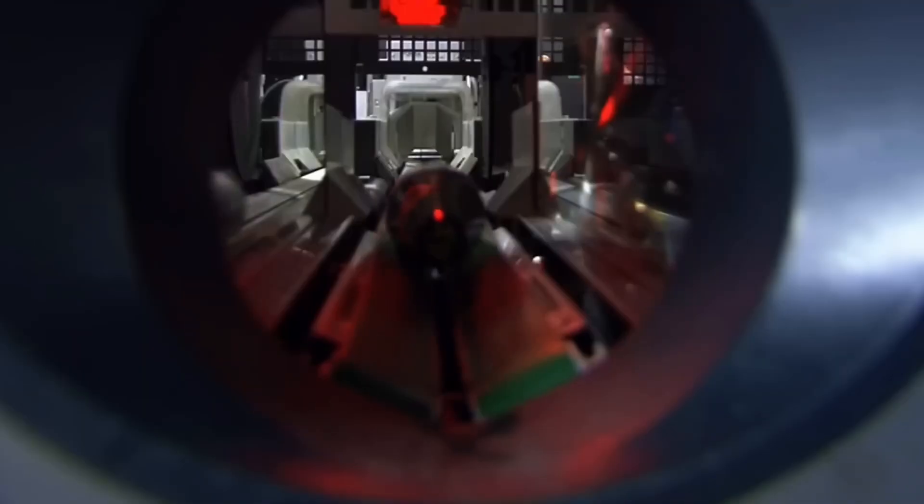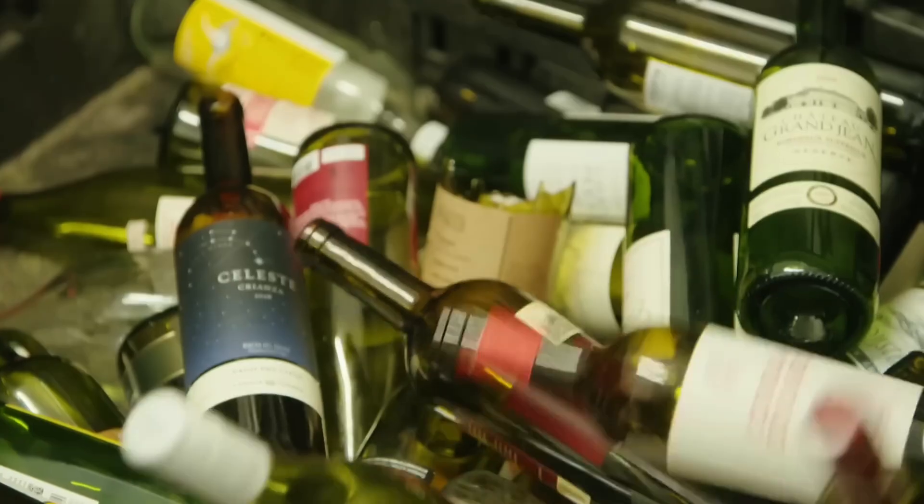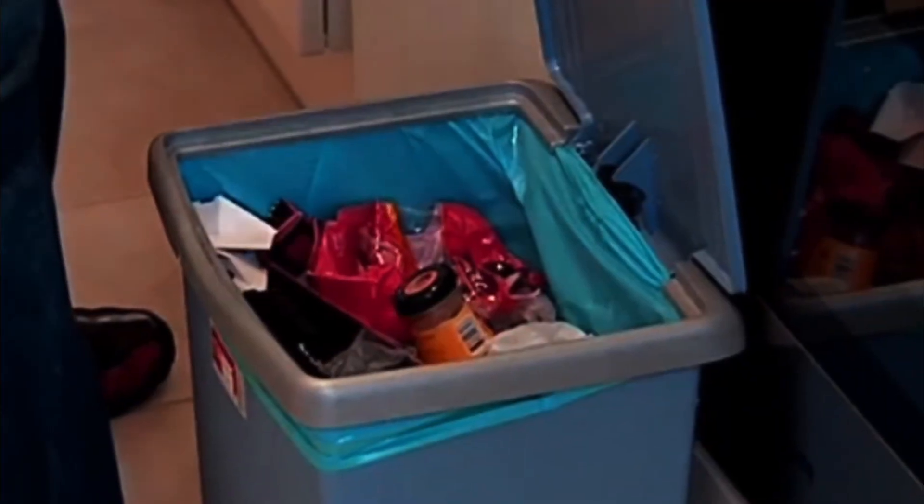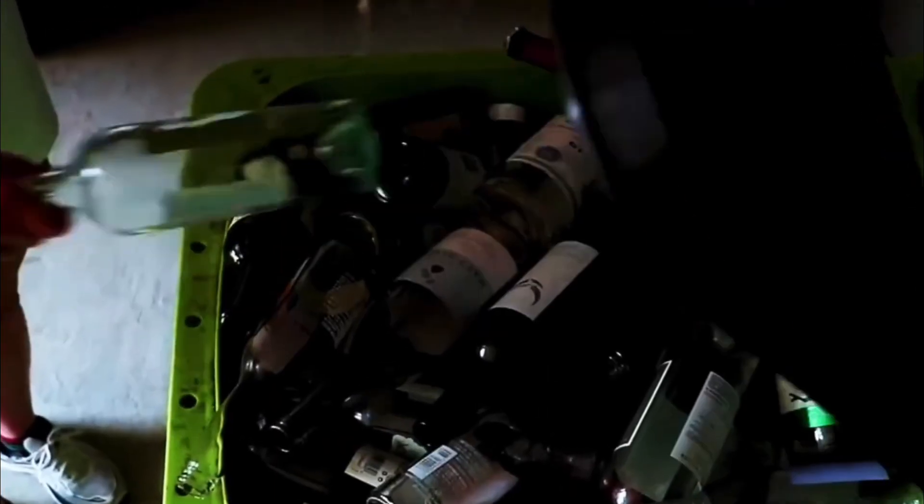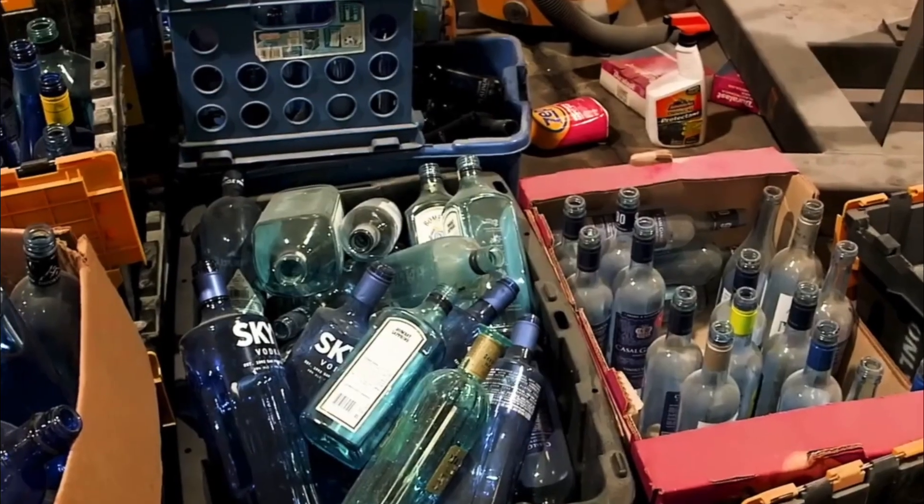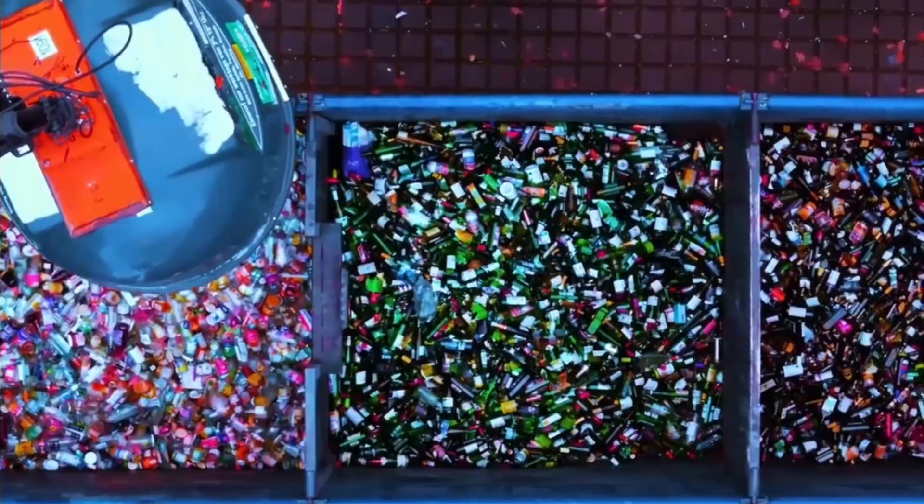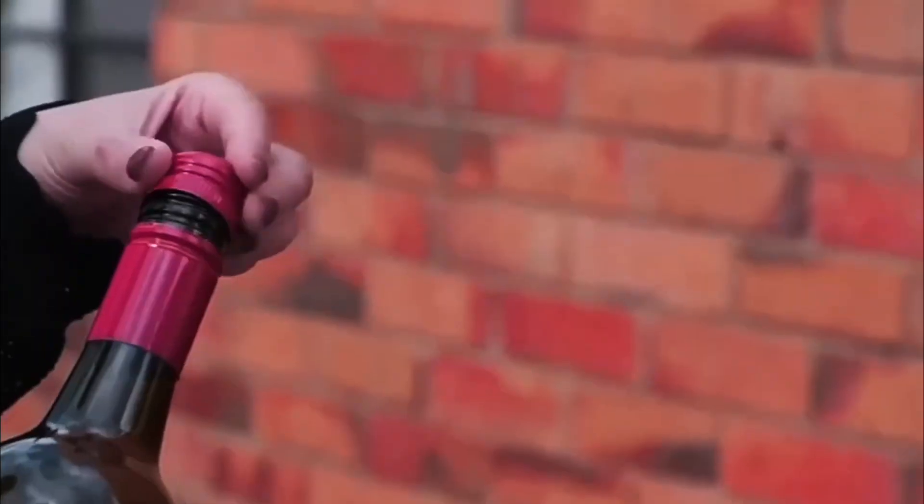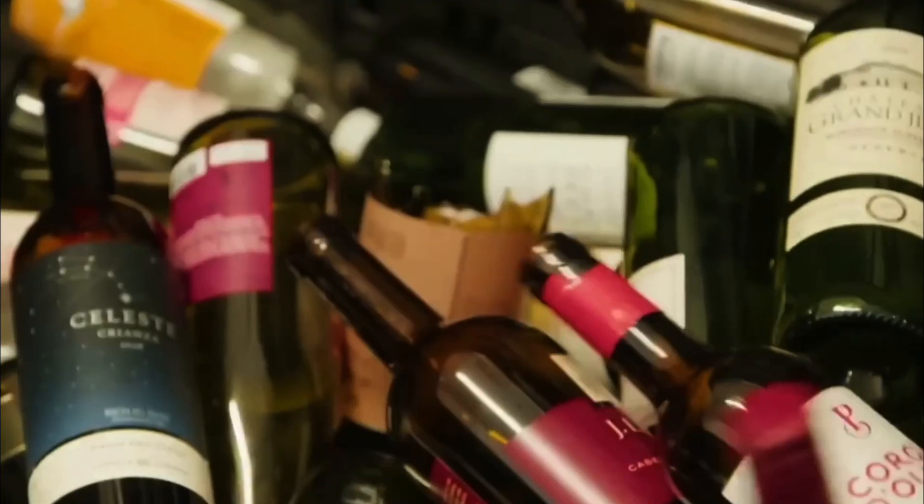First, the glass is sorted by color: clear, green, and brown. Optical scanners analyze each shard with laser light and direct it into the proper shoot using air jets. Magnets and electromagnetic traps remove metal caps and lids, while powerful air streams blow away paper labels and plastic residues. After that, the glass goes through a wet cleaning stage.